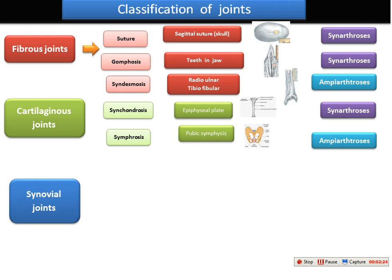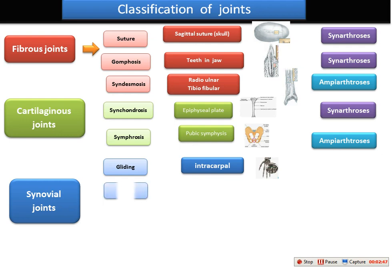The third type of joint is the synovial joint. The synovial joint has a synovial capsule as well as synovial fluid. We have six types of synovial joint. The first is the gliding joint, and we find this in the intercarpal bones — we call it the intercarpal joint.